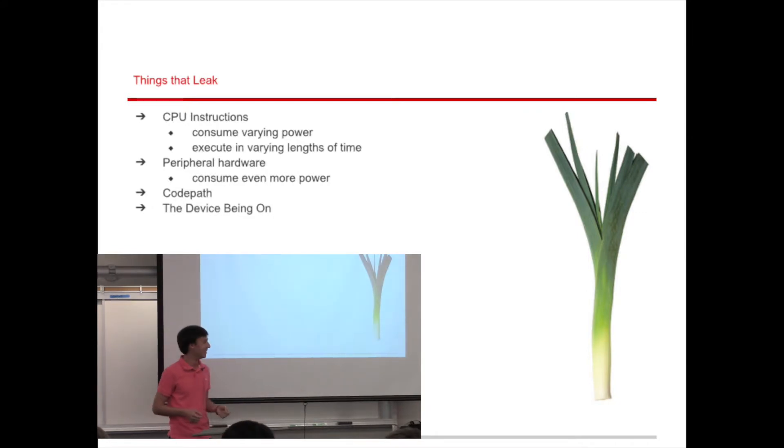So what leaks information? CPU instructions leak information. Different instructions on your processor might consume different amounts of power. So if you do one instruction at one time and another instruction at another, people monitoring how much power your computer is consuming know which instruction you're running. They also execute in varying amounts of time. So not only can the person monitoring your computer know that you're doing this thing at that time versus another, but they also know how long you're doing that thing. And so if you're doing that thing for a certain amount of time and that conveys information about what it's doing that thing on, then you're leaking that data simply by how long you're processing it.